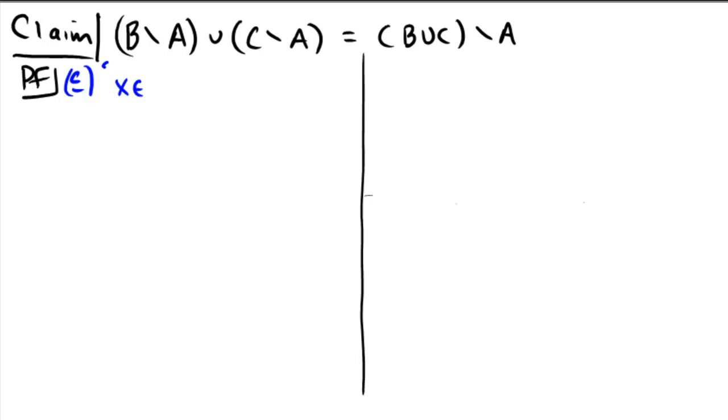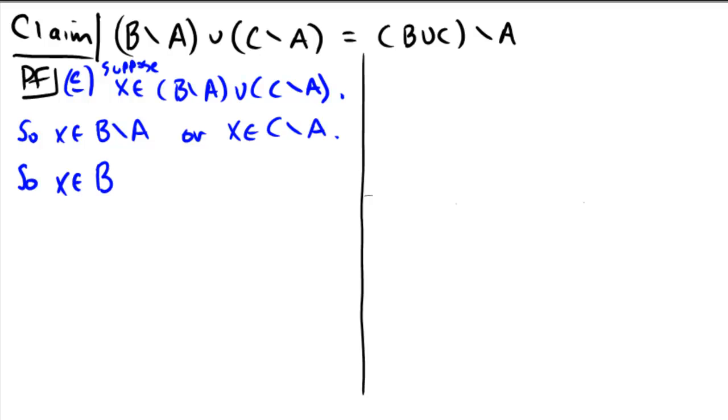So let's just do this together. And suppose that x is in b minus a union c minus a. Okay, what does that mean? The union means you're in either one or the other. So that would mean that x is in b minus a or possibly x is in c minus a. One of those two things has to happen. What would it mean if x was in b minus a? So what would that mean? That would mean that x would have to be in b, but x is not in a.